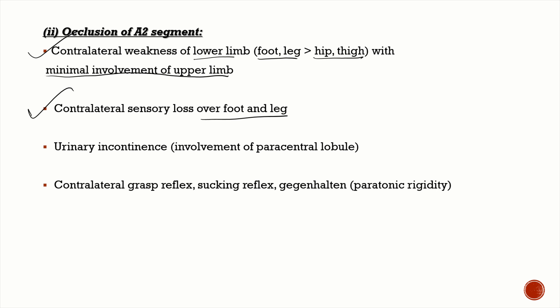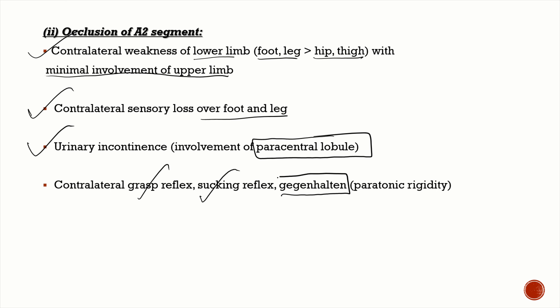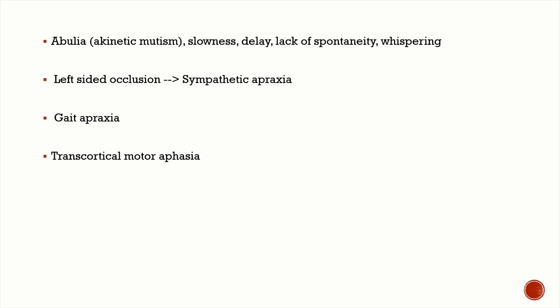Next, you're going to have urinary incontinence, due to involvement of the paracentral lobule. Other features include contralateral grasp reflex, sucking reflex, and gegenhalten — which is an important MCQ — also known as paratonic rigidity.